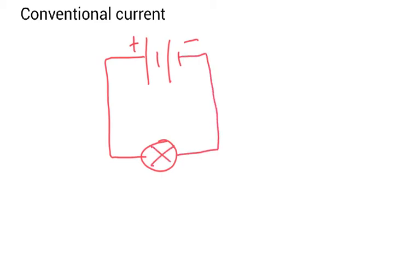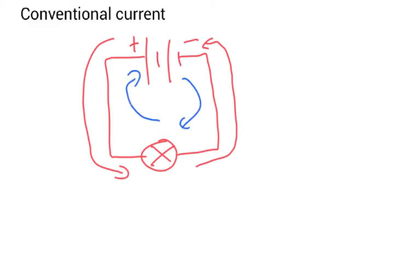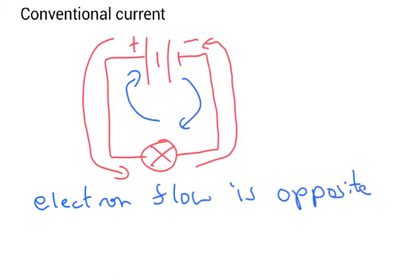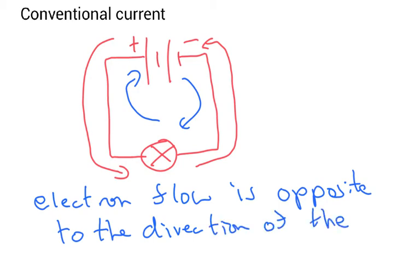Now, conventional current and the flow of electrons are not the same thing. Conventional current goes from positive to negative. So in my circuit here, conventional current would be going around this way. However, electrons actually flow in the opposite direction. The electron flow is opposite to the direction of the conventional current.